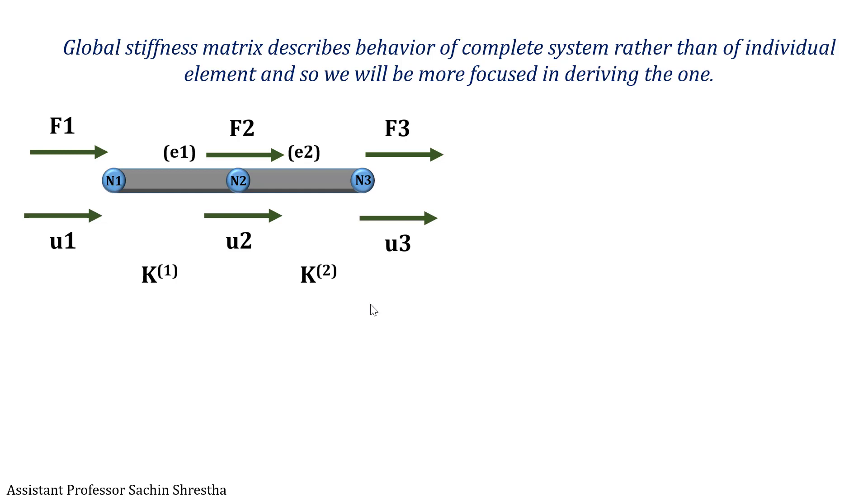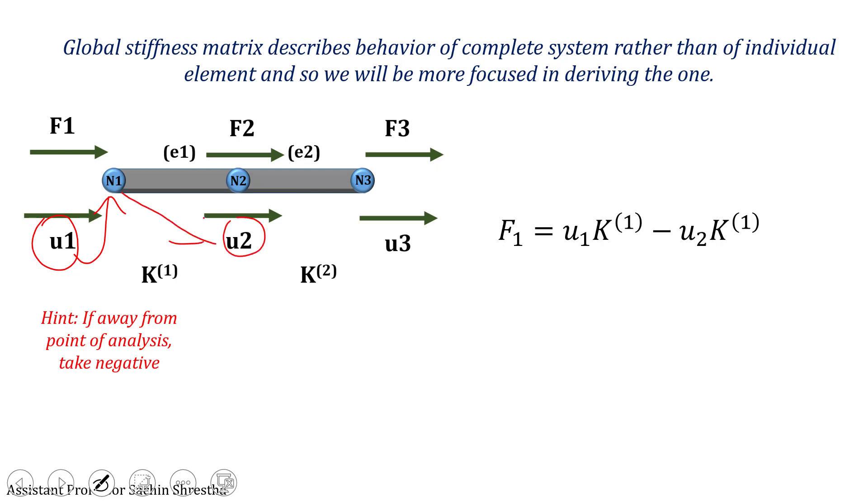For force F1, we take positive for U1 and negative for U2. This is because U1 is close to node 1 and U2 is away from node 1.